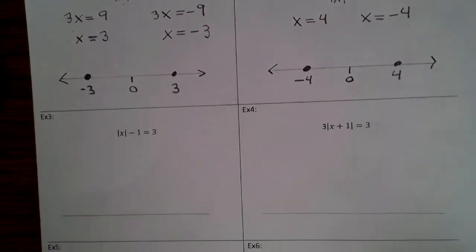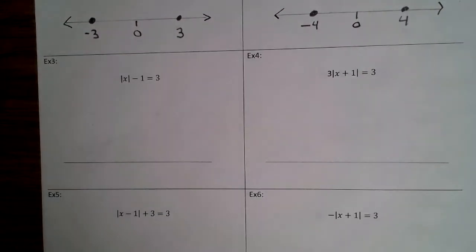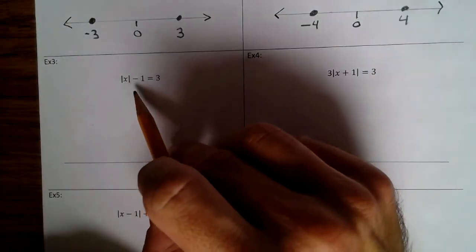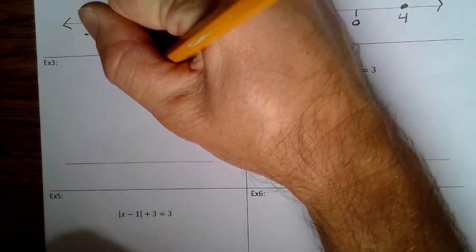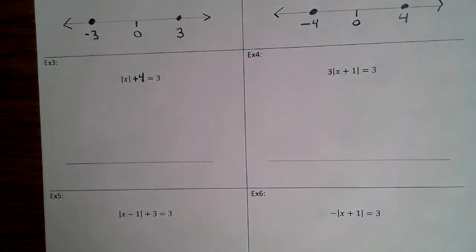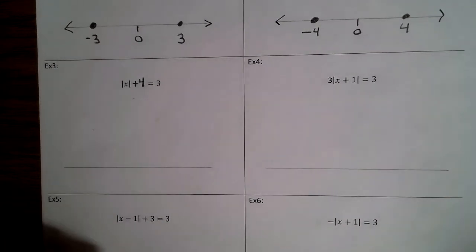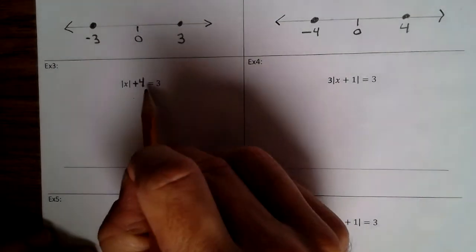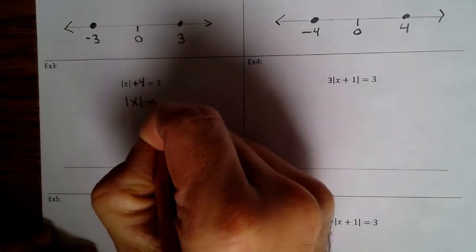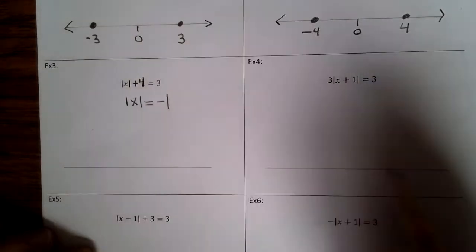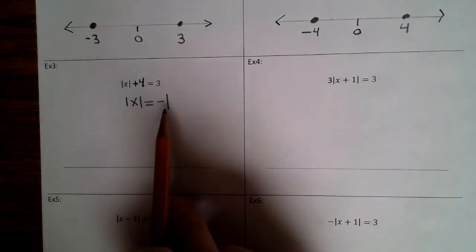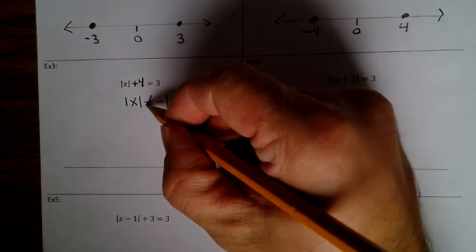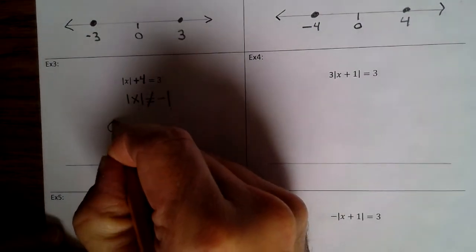All right, let's take a look at example 3. Let's go ahead and change example 3 because we don't want an identical example 2. So let's change it to x plus 4. First step, we're going to isolate the absolute value. We're going to subtract 4 from both sides. We get the absolute value of x equals negative 1. The absolute value of a number will and can never equal a negative number. So this is no solution.